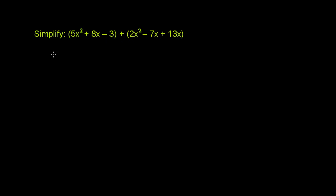So let me just rewrite it once without the parentheses. So we have 5x squared plus 8x minus 3 plus 2x squared. If this was a minus, then we'd have to distribute the negative sign, but it's not. So plus 2x squared minus 7x plus 13x.